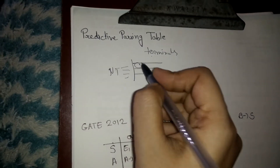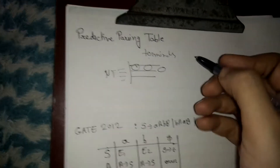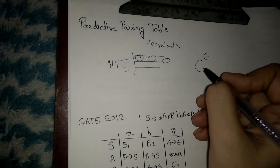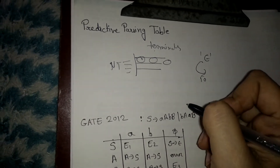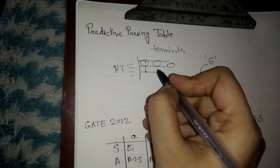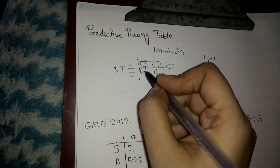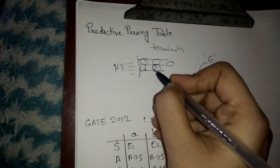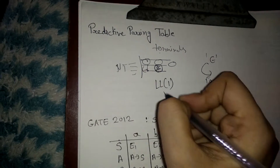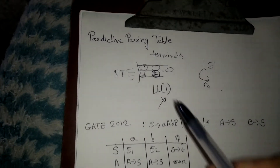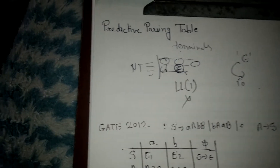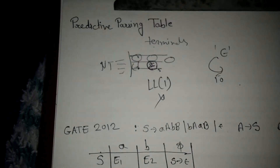Whatever is in FIRST will be entered directly. If FIRST contains an epsilon production, then we look at the FOLLOW set and enter epsilon in those corresponding entries. If any single cell has multiple entries, then the given grammar is not LL(1).